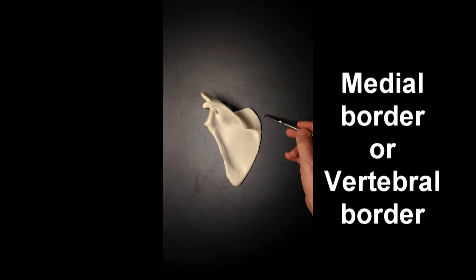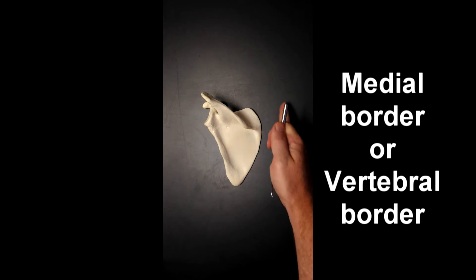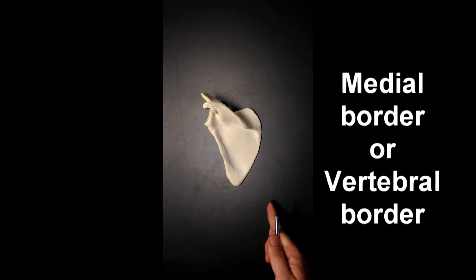Let's run through the borders of the scapula. This border on this side would be the medial border of the scapula. We also call this the vertebral border of the scapula, because the vertebral column would sit right here.